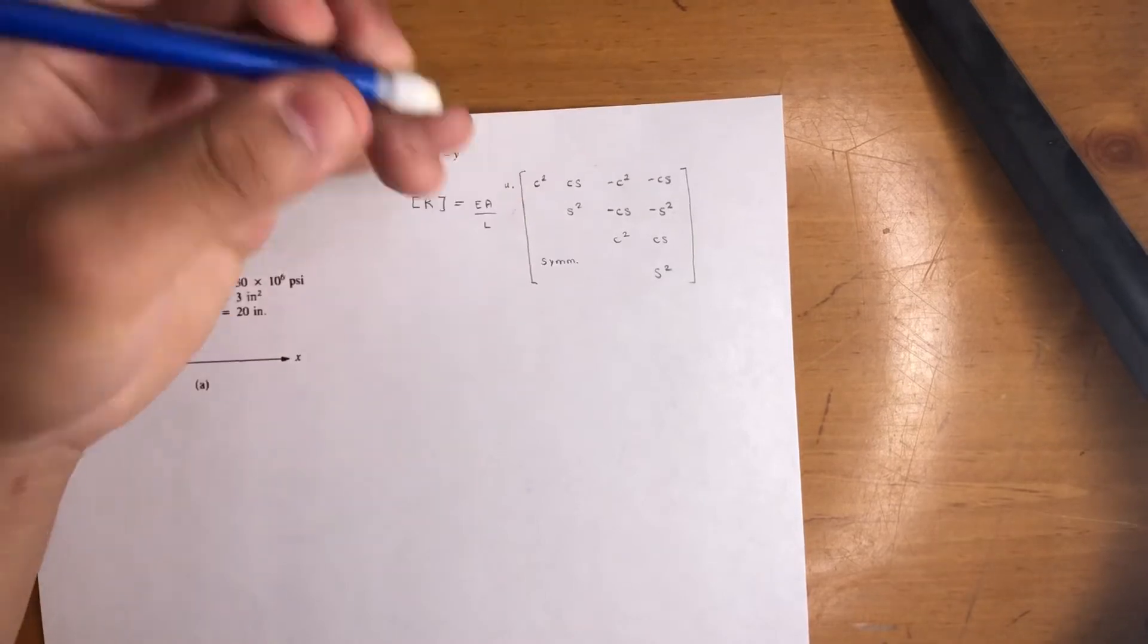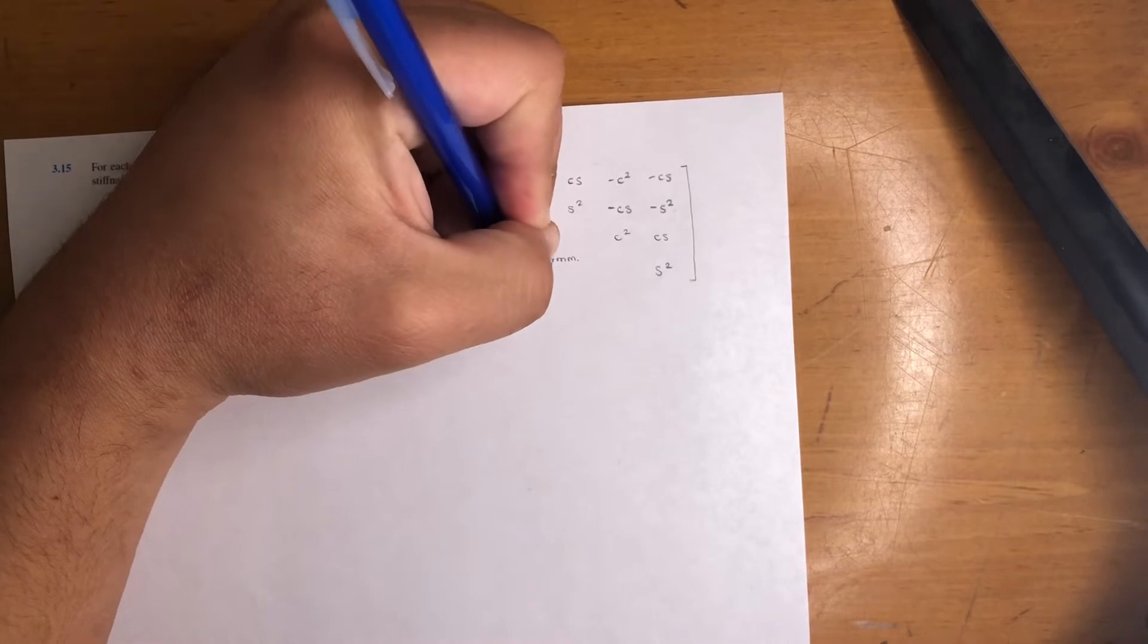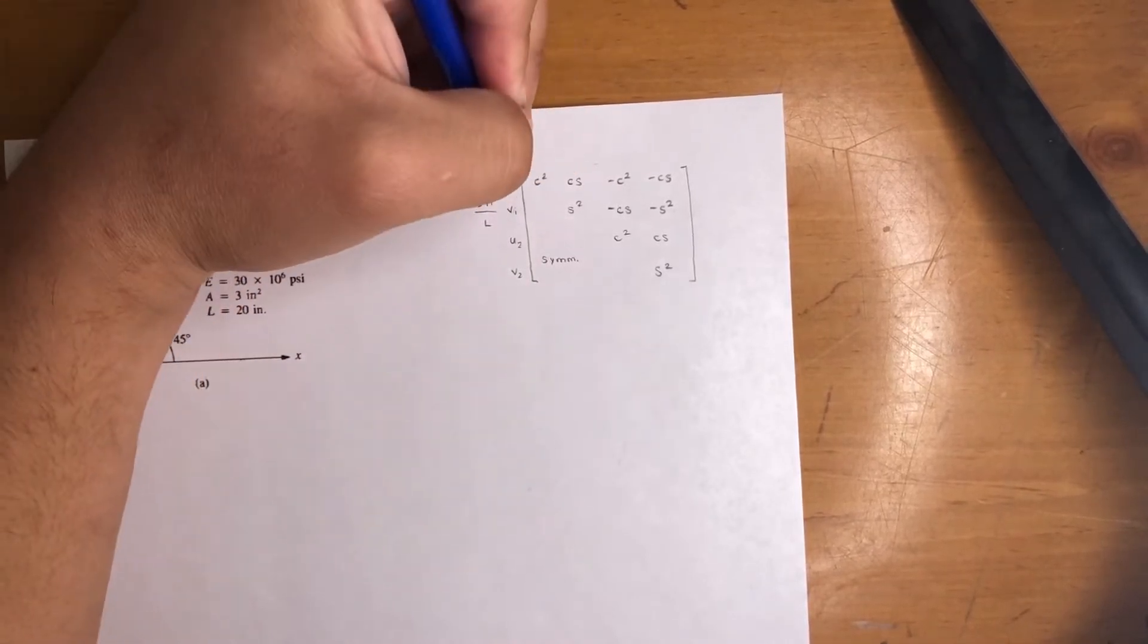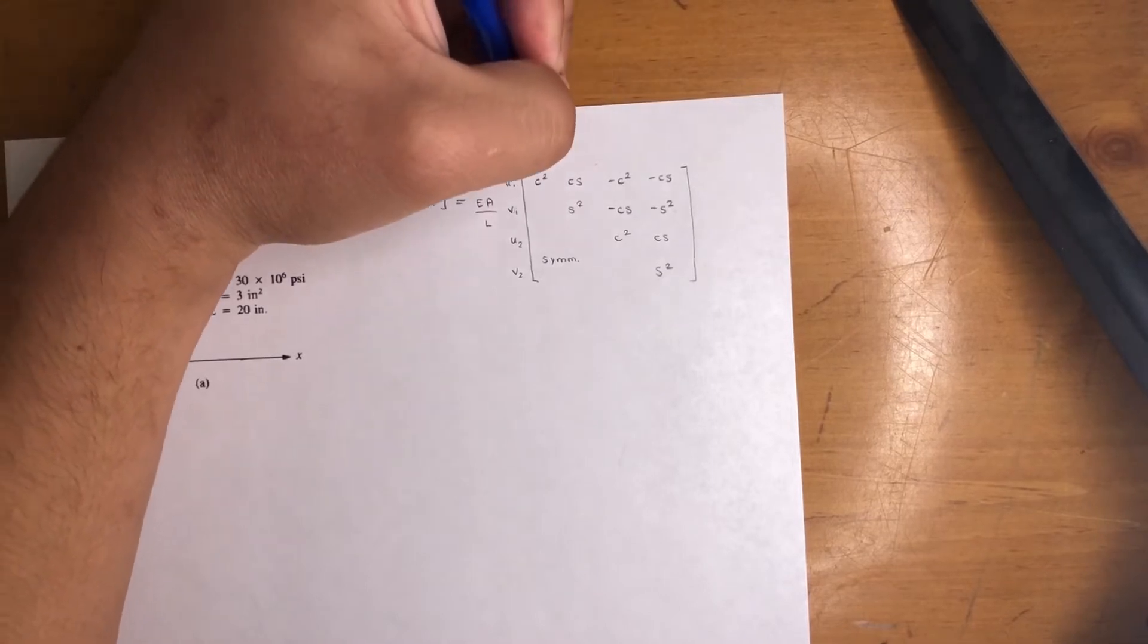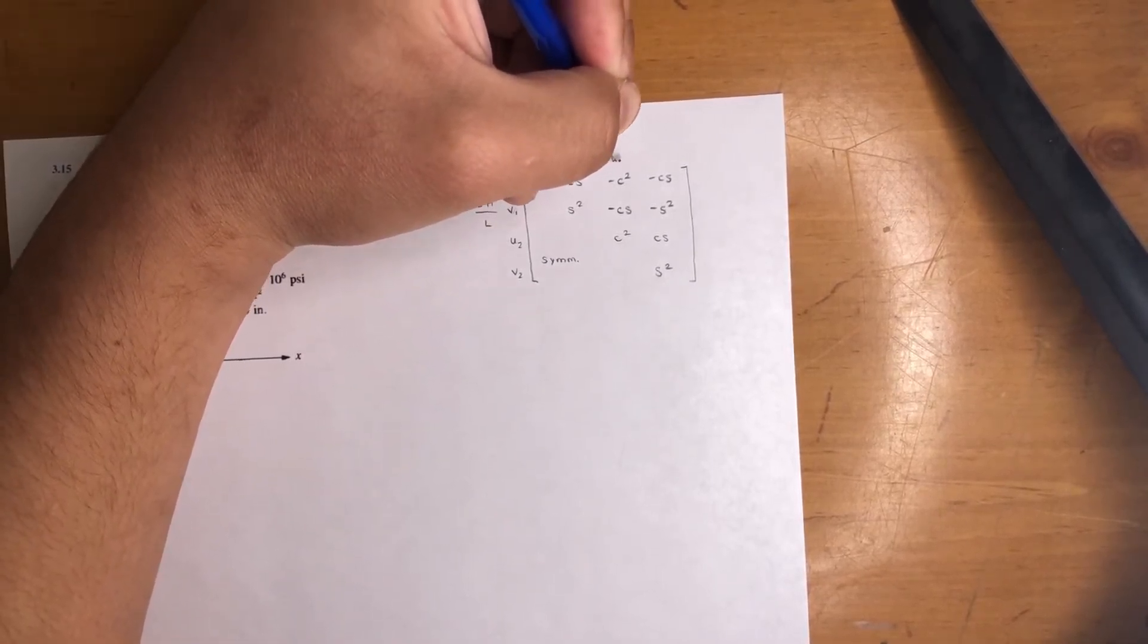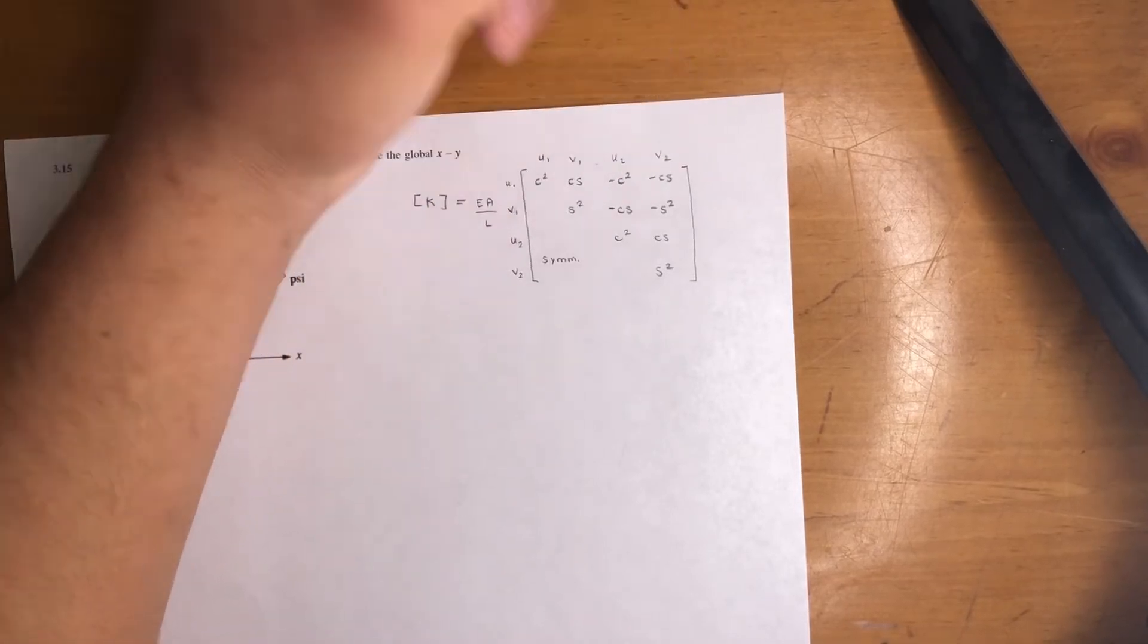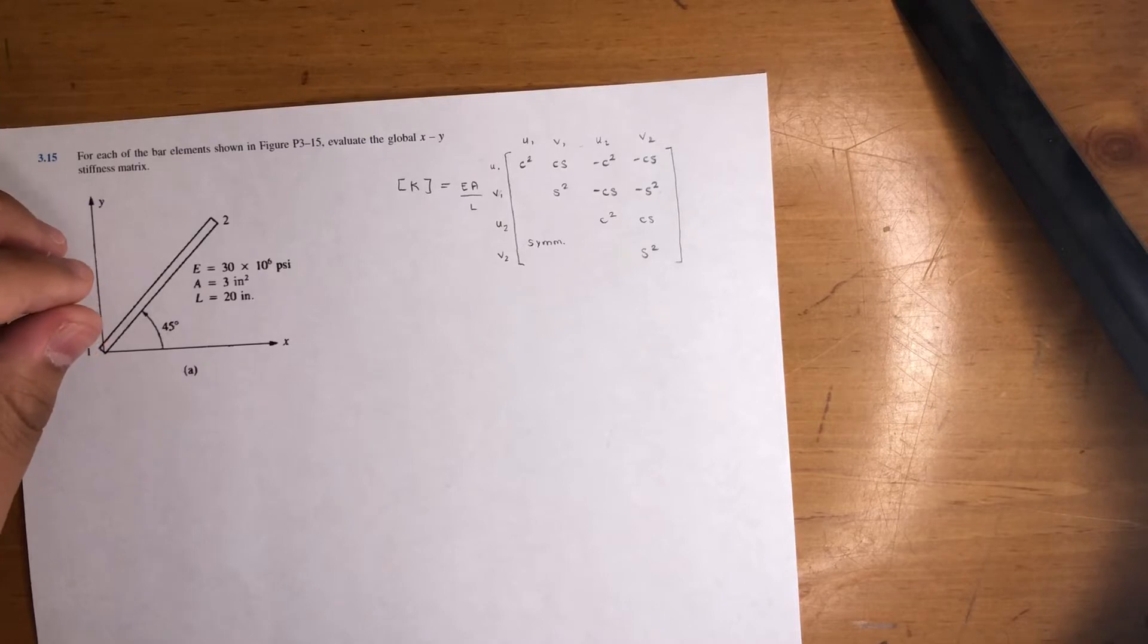Now we have U1, V1 and U2, V2 as our nodes—pretty much X and Y components at node one, X and Y components at node two. These problems are pretty straightforward, not even that hard, but once you start doing a whole structure they could get pretty long.